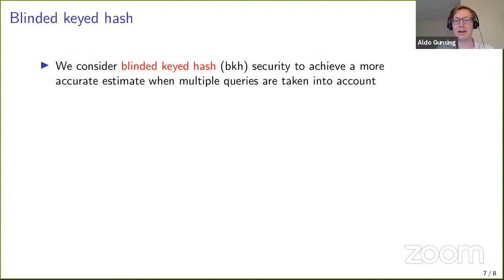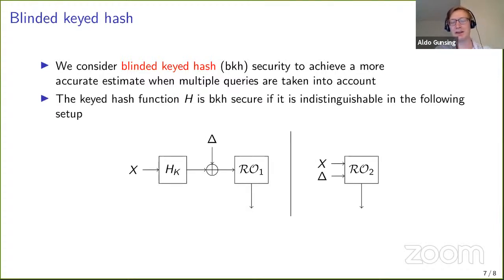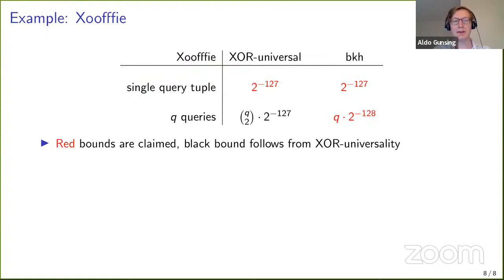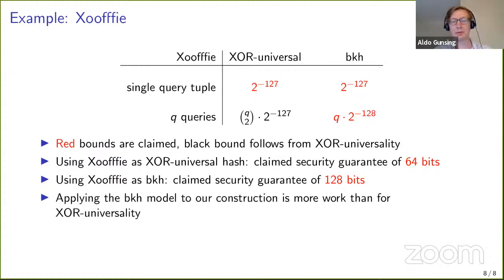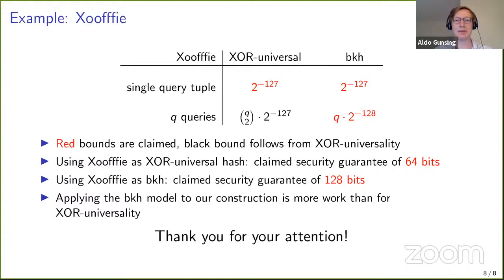For this, we considered the blinded keyed hashing model, BKH for short, which captures multiple queries at the same time. It is defined as an indistinguishability setup. The main example for this is Zufi, which has dedicated BKH security bounds much better than the generic XU universal bounds. Using Zufi as an XU universal hash gives only 64 bits of claimed security, but using it as a BKH hash gives 128 bits. To reduce security in our construction to the BKH model requires a bit more work than for XU universality, and we are able to do so. That's the end of my talk; thank you for your attention.